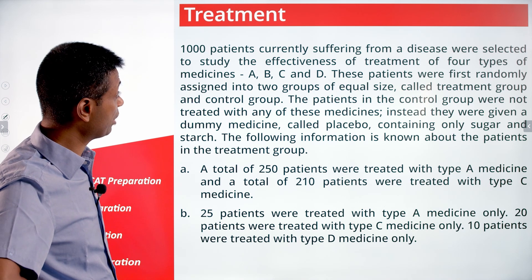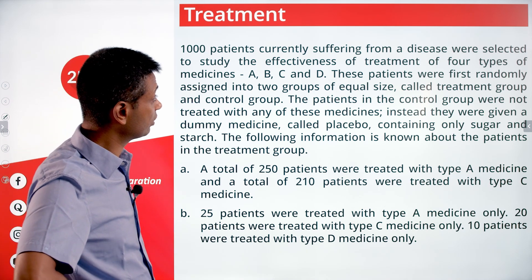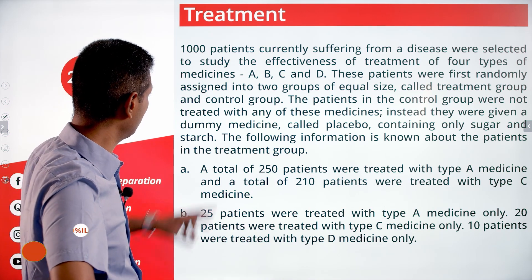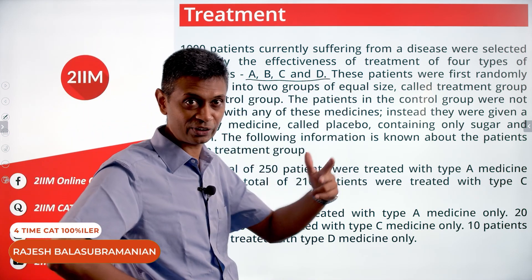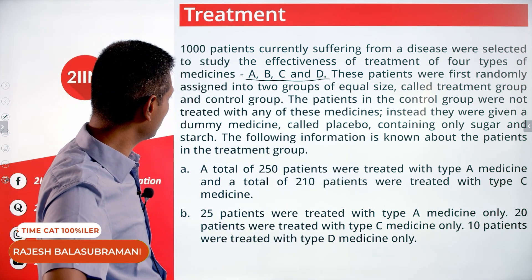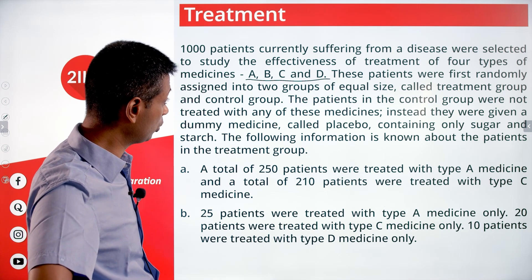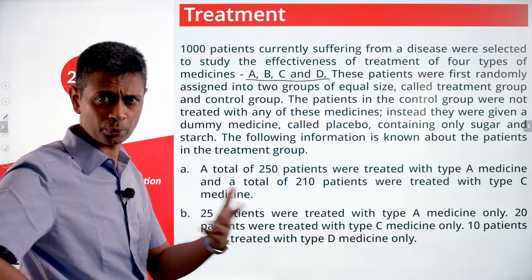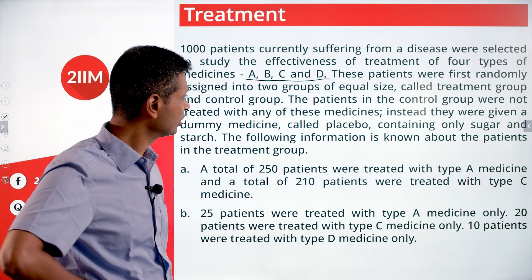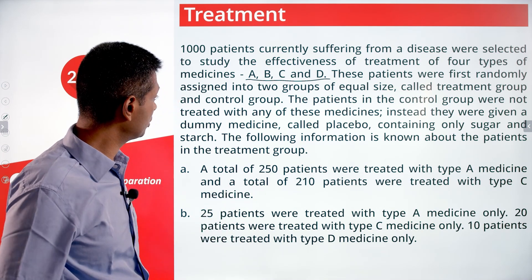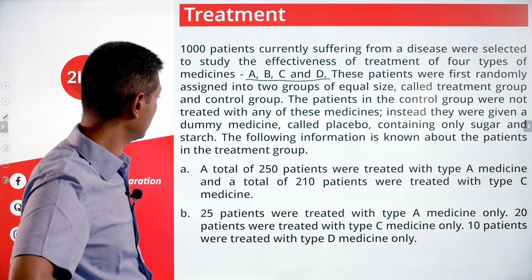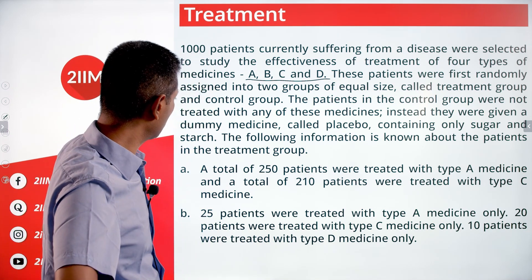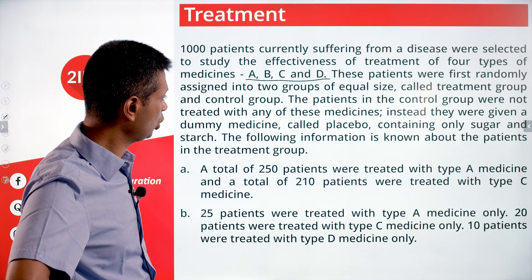A thousand patients currently suffering from a disease were selected to study the effectiveness of treatment of four types: A, B, C, and D. These patients were first randomly assigned into two groups of equal size — 500 each — called the treatment group and control group. The patients in the control group were not treated with any of these medicines; instead they were given a dummy medicine called a placebo containing only sugar and starch.